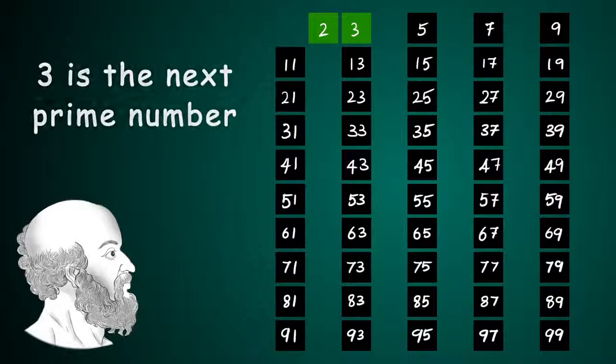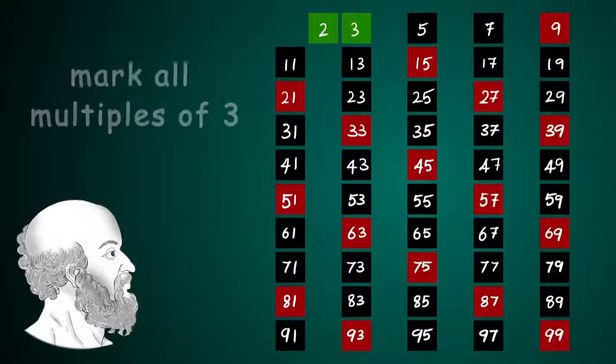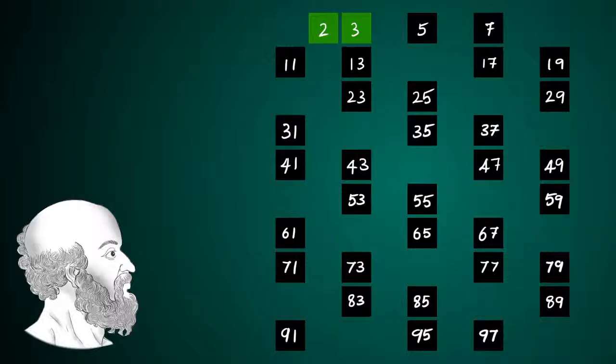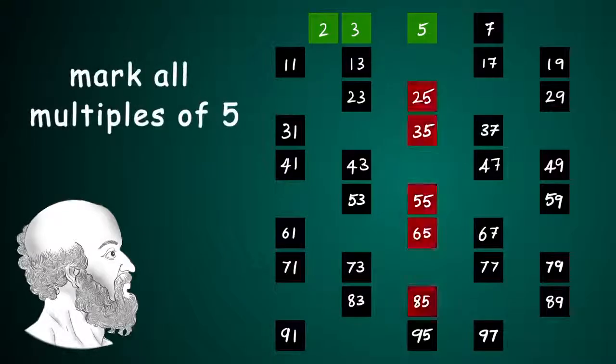We highlight 3. We identify all multiples of 3 and then delete all the multiples of 3 again leaving 3 alone. The next number is 5. We repeat the procedure. We highlight 5, identify all multiples of 5 and then delete them.